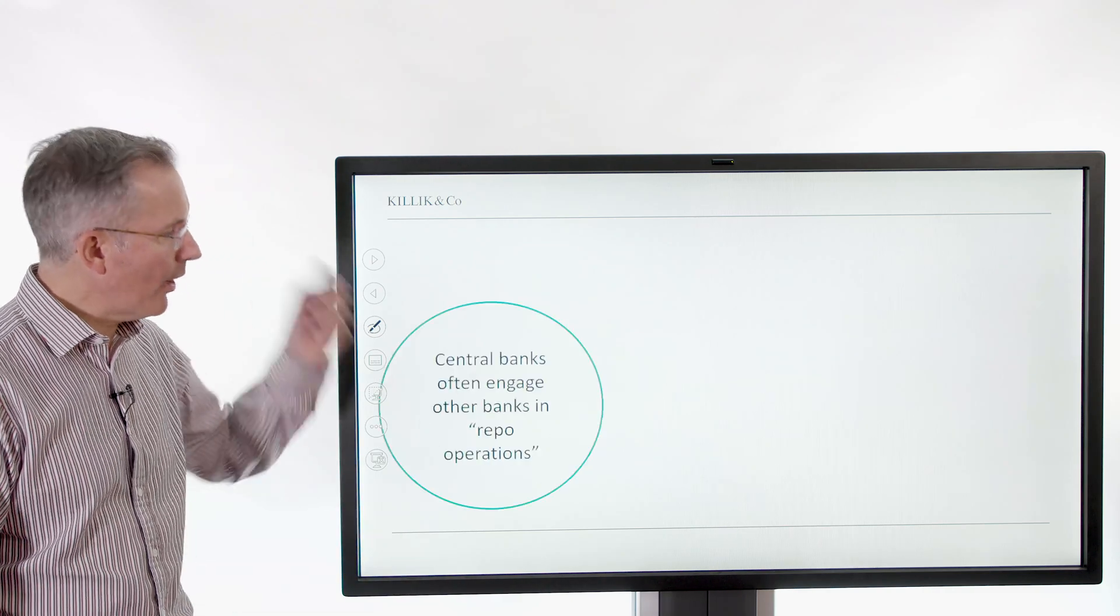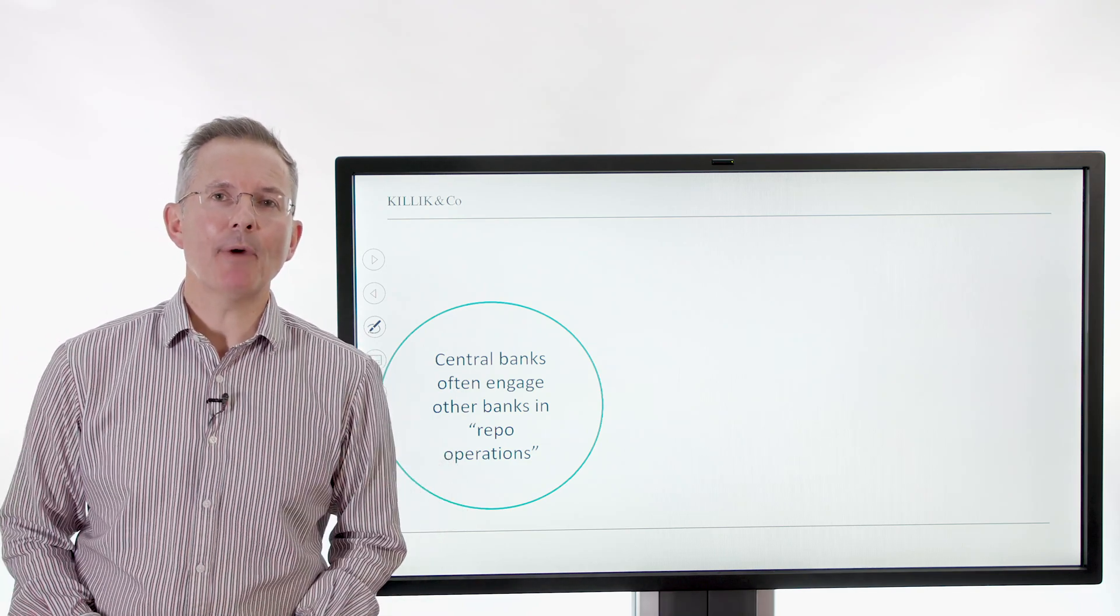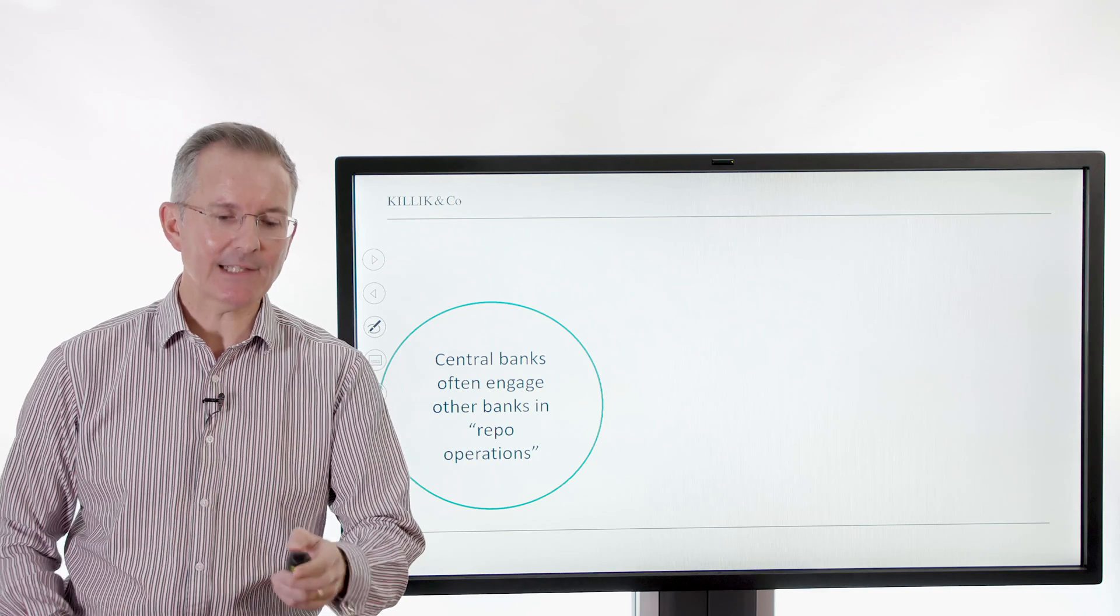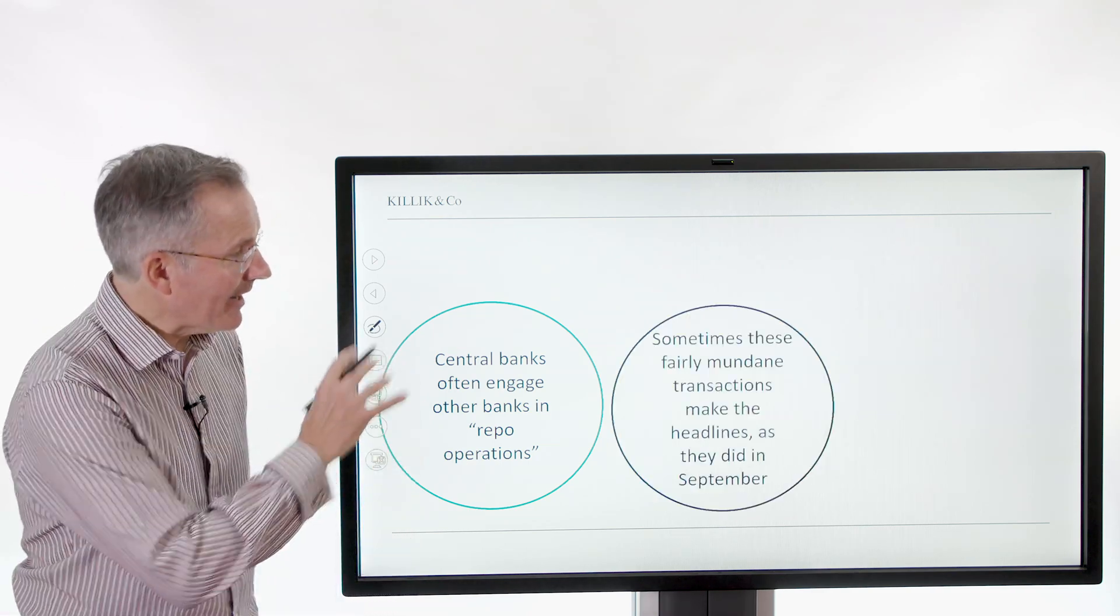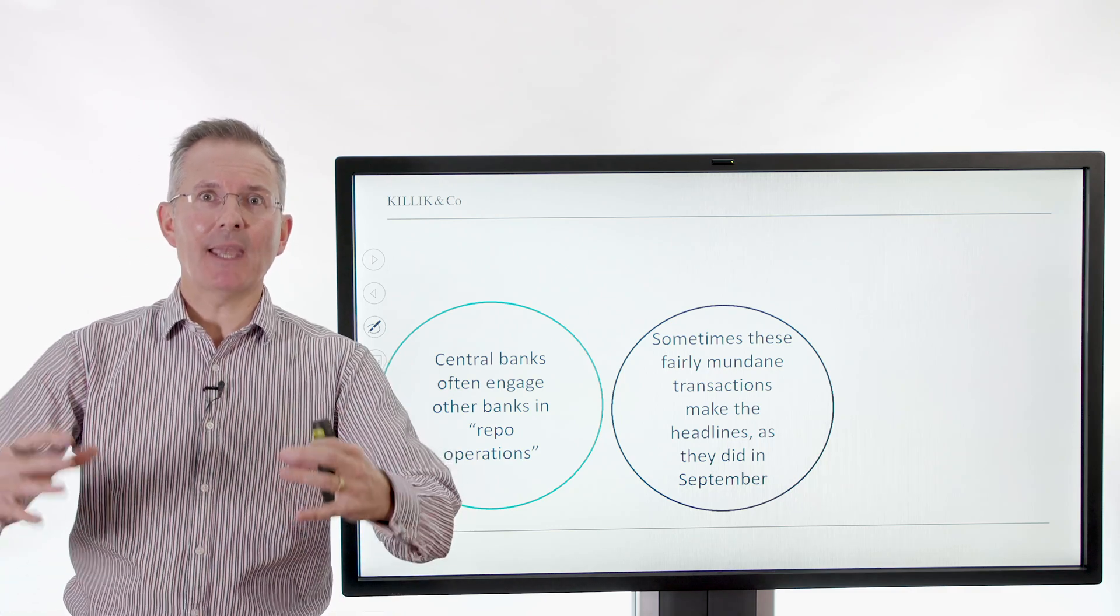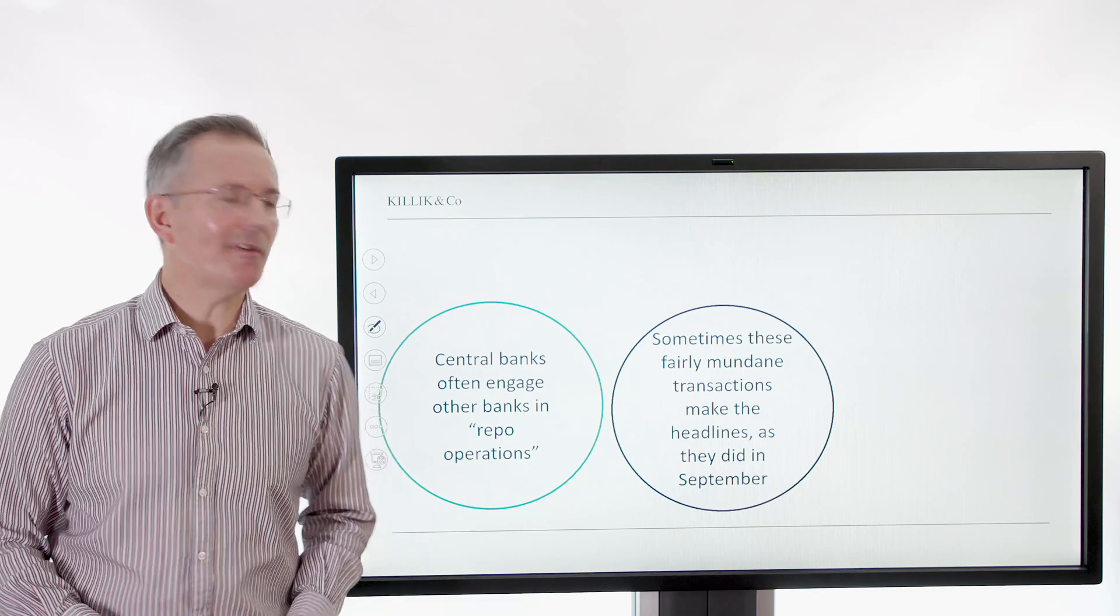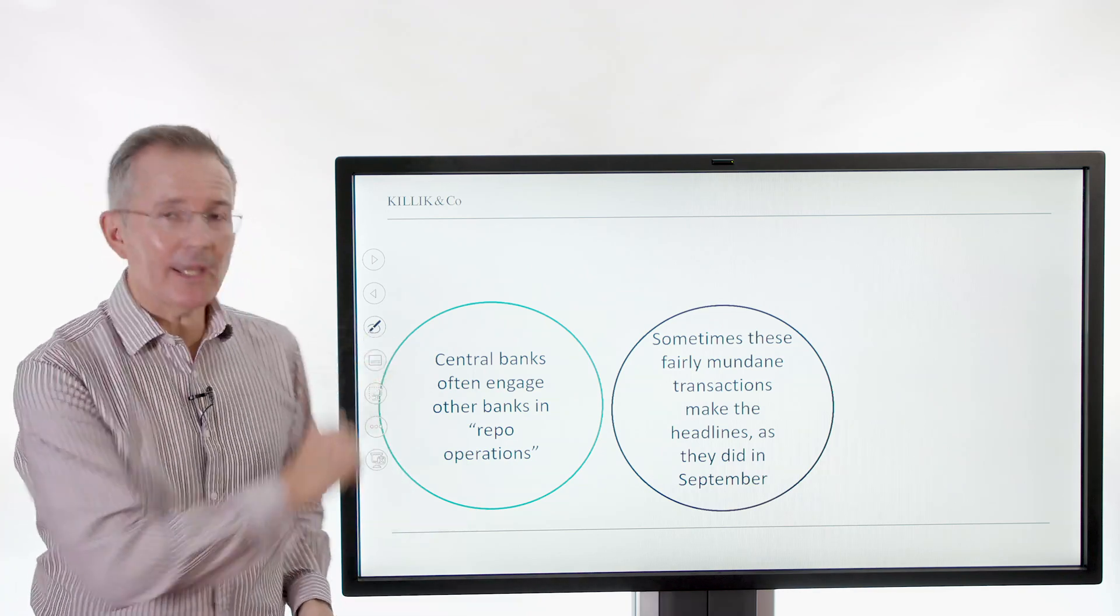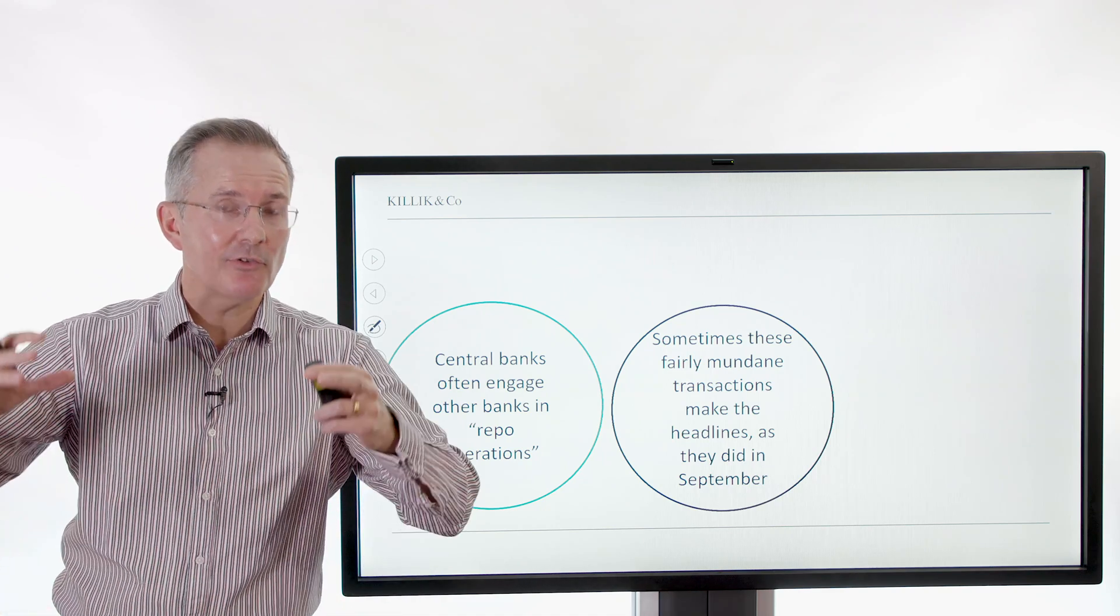So central banks often engage other banks, commercial banks around the market in what are called repo transactions. They happen all the time between banks of different shapes and sizes. So if you haven't heard of them, they're actually very common and fairly mundane. This is often known as the plumbing. This market is the plumbing that supports a key section of the financial markets. Normally there's nothing to say. It's like move along, nothing to see really. The repo market functions fairly smoothly.